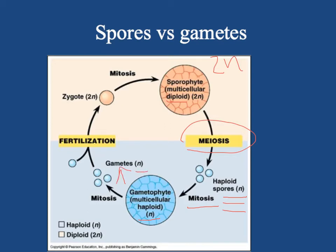Those gametes are also 1n through the process of mitosis. There are usually two different kinds of gametes — male gametes and female gametes. They unite in the process of fertilization to make a 2n zygote. And that zygote goes through mitosis, repeated cell division, to grow up into a sporophyte, which is this adult 2n algal form.